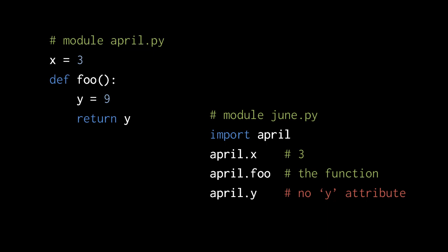If, however, we write april.y, well, the april module has no y attribute, so this will throw an exception.